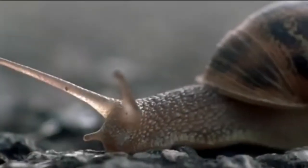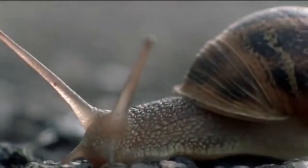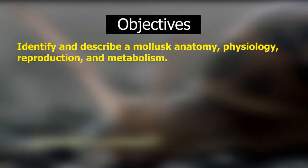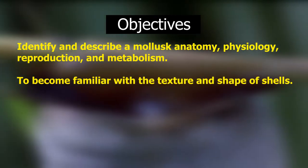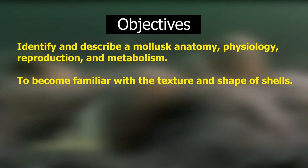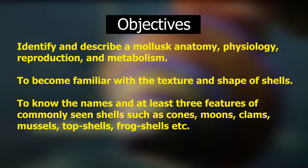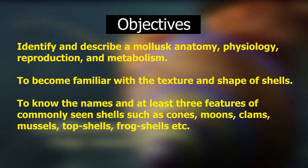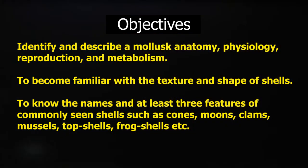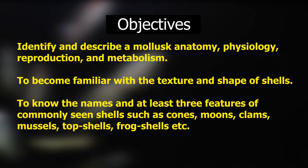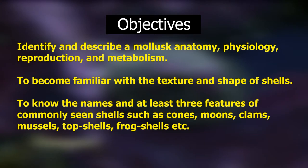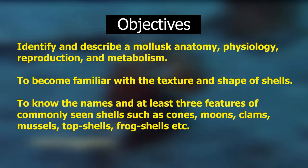So at the end of the lesson, you would be able to identify and describe Mollusks' anatomy and to be familiar with the texture and shape of shells. Also, you are going to know the names of at least three features of commonly seen shells such as cones, moons, clams, mussels, top shells, frog shells, etc.